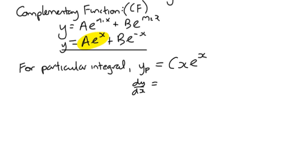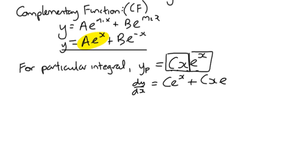We're going to differentiate Cxe^x. It involves the product rule, taking x as the first term and e^x as the second. The product rule says differentiate the first and write down the second, plus write down the first and differentiate the second. Taking out the common factor, the first derivative is Ce^x(1 + x).